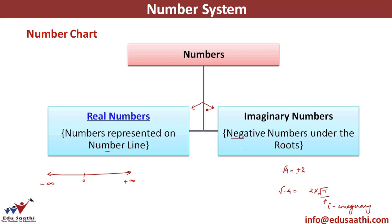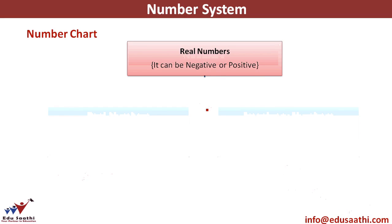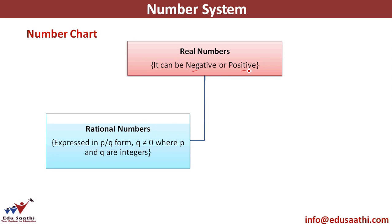These are the two broad classifications of numbers. Let's talk about real numbers now. Real numbers can be represented on the number line extending from minus infinity to plus infinity, so real numbers can be negative, positive, or zero.